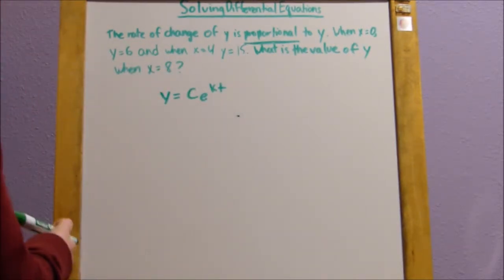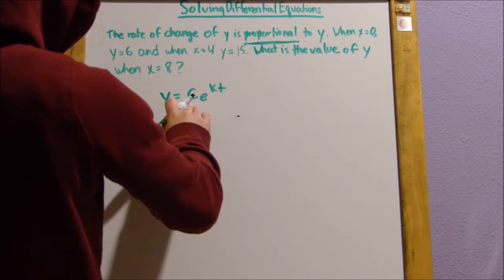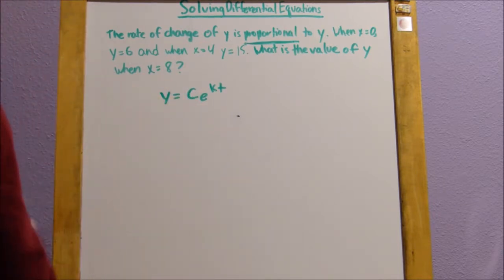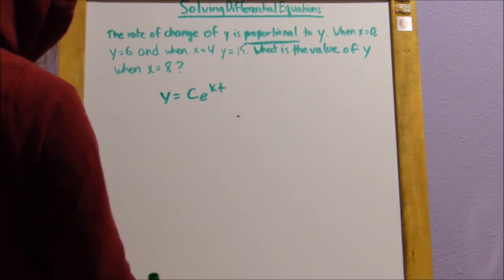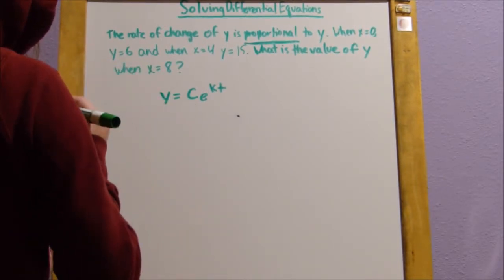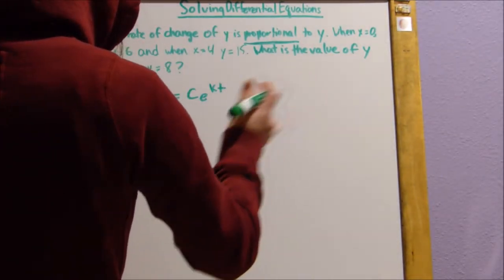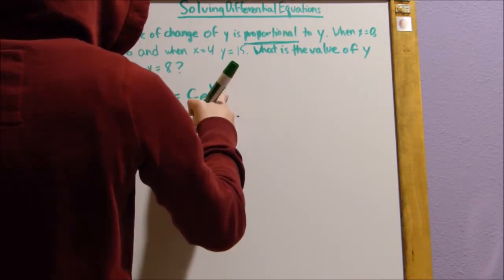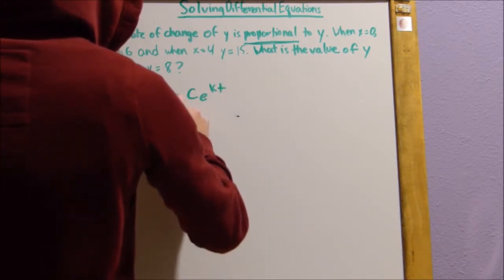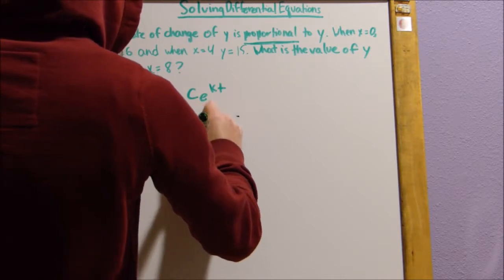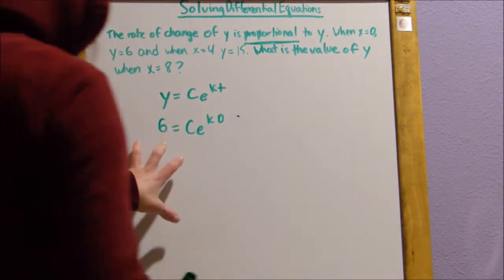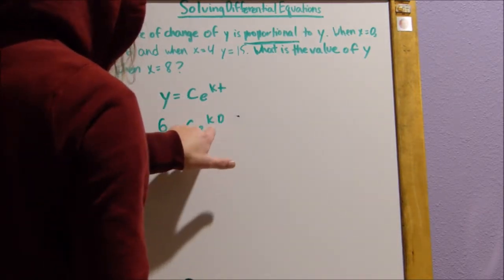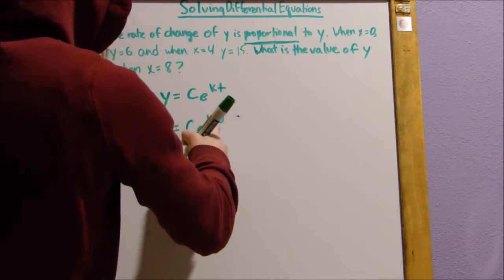What I like to do first is I like to find out what the c is, the initial amount. So what I do is I plug in the stuff that I know first, and then I work backwards from that. So when x equals 0, that's going to be t here in this situation.